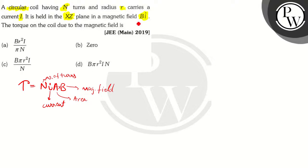So let's substitute what these values are given as. We can write them as N is simply N, I is also simply I, A is given to be - it is held in the XZ plane.